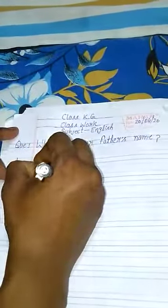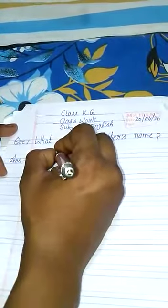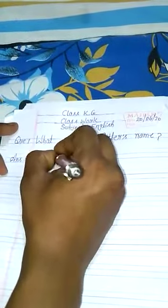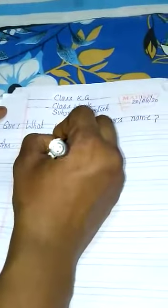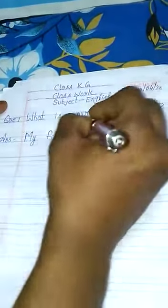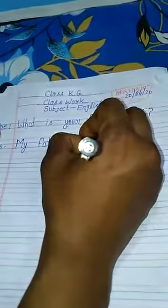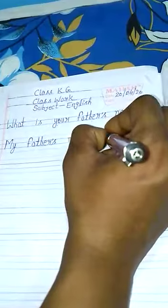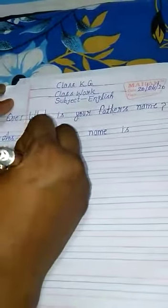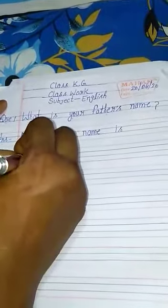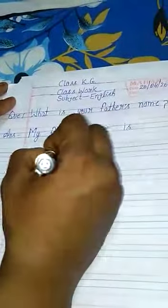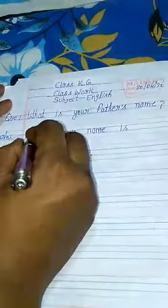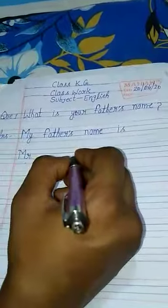Answer — answer means uttar. Y, 'my' means mere. F-A-T-H-E-R-S, 'father's' means pita ji ka. N-A-M-E, 'name' means naam. I-S, 'is' means hai. M-R, 'Mr.' dash. My father's name is Mr. Noor Mohammad.